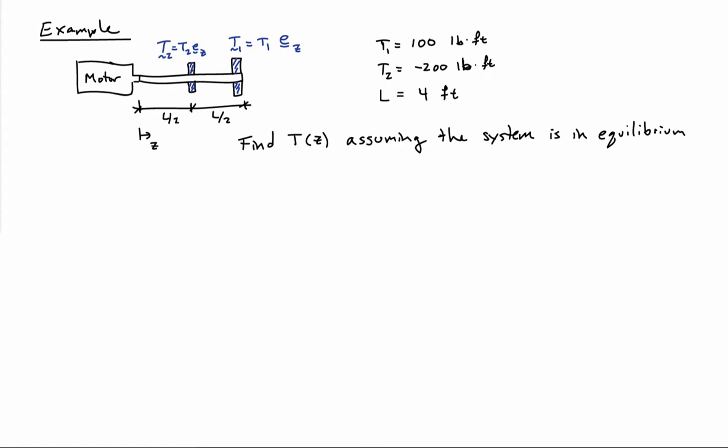So the gear on the end applies a torque T1, and the gear in the middle applies a torque T2. T1 is 100 foot-pounds, and T2 is minus 200 foot-pounds, and the length of the overall drive shaft is 4 feet.